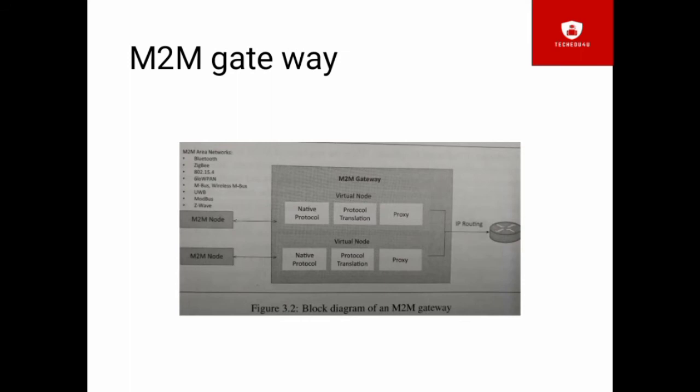The M2M gateway performs protocol transition to enable IP connectivity from mission to mission area networks to mission to mission. The gateway acts as a proxy, performing translation from one framework to native protocols of the internet protocol.